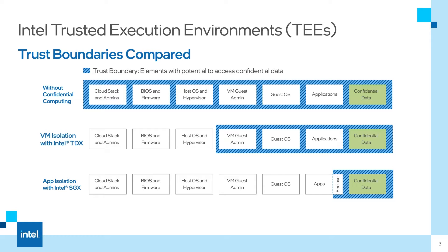A big improvement over this is Intel TDX. The trust boundary starts at the VM guest admin — you're still trusting that the VM guest along with all its libraries and applications are trusted. However, now with the cloud stack, someone with root access can be untrusted. If they were to dump the memory of a trust domain — what we call a confidential VM using Intel TDX technologies — you would see a lot of encrypted data. Intel TDX lets you take existing workloads and run them unmodified but with the extra protection that Intel TDX provides. This opens up cloud computing in mass for sensitive workloads.